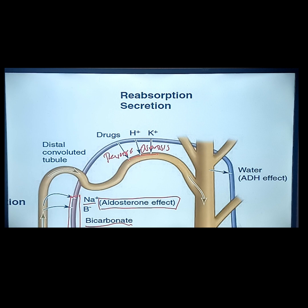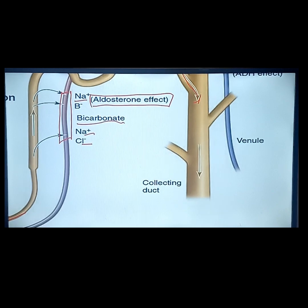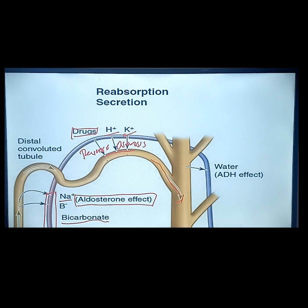Reverse osmosis then occurs in the distal tubule, which pulls waste products including drugs present in the arterioles, hydrogen, and potassium going into the distal tubule and towards the collecting duct. The collecting duct leads to the ureter, into the bladder, where urine accumulates until we feel the urge to urinate.